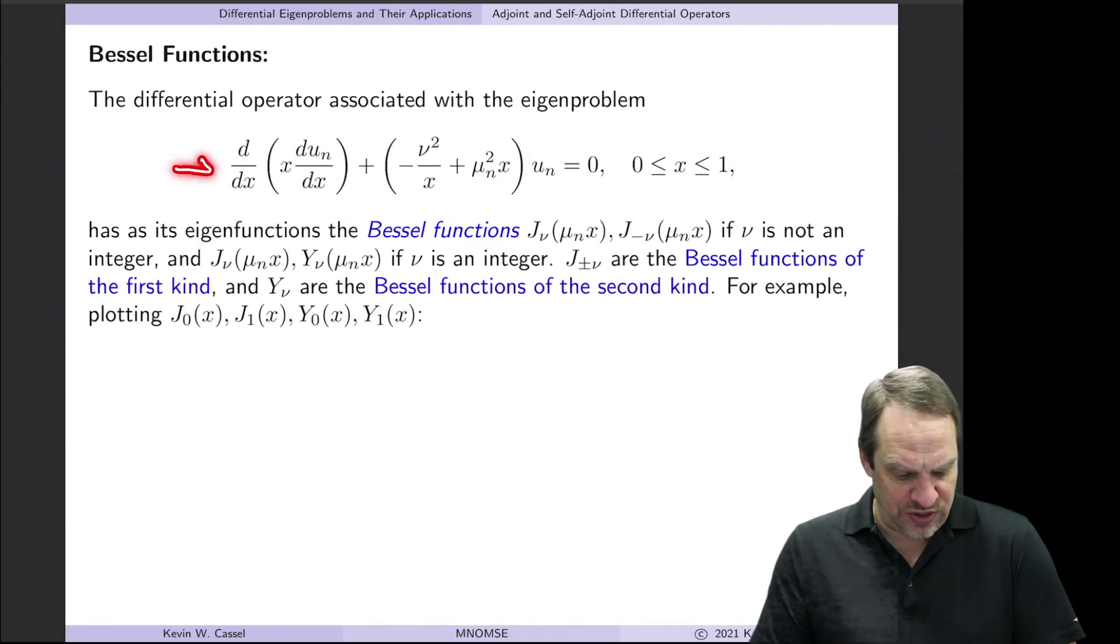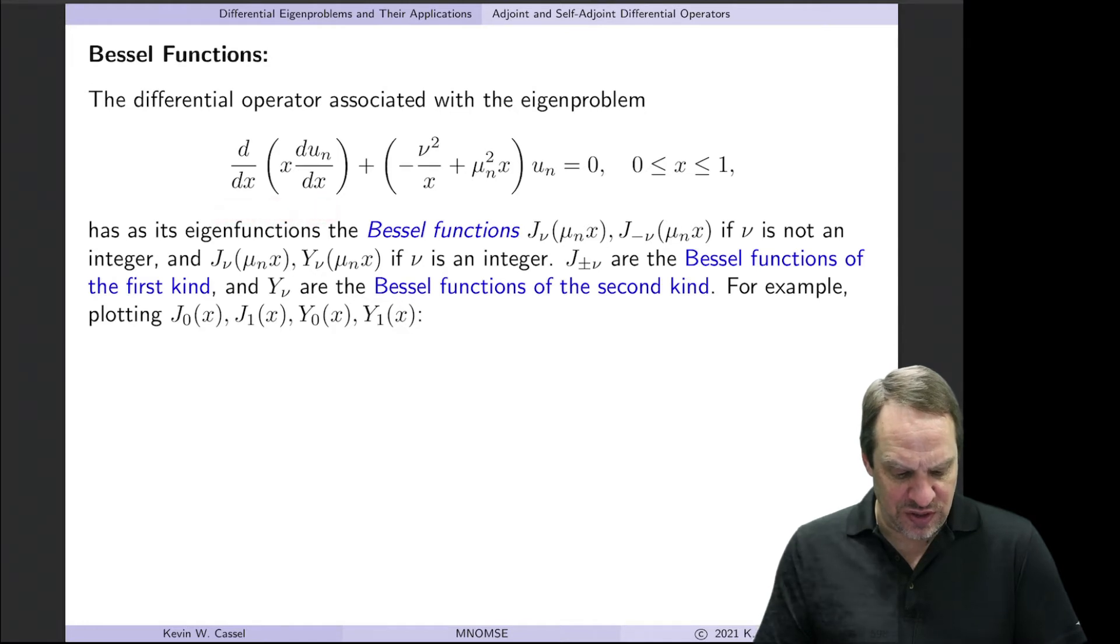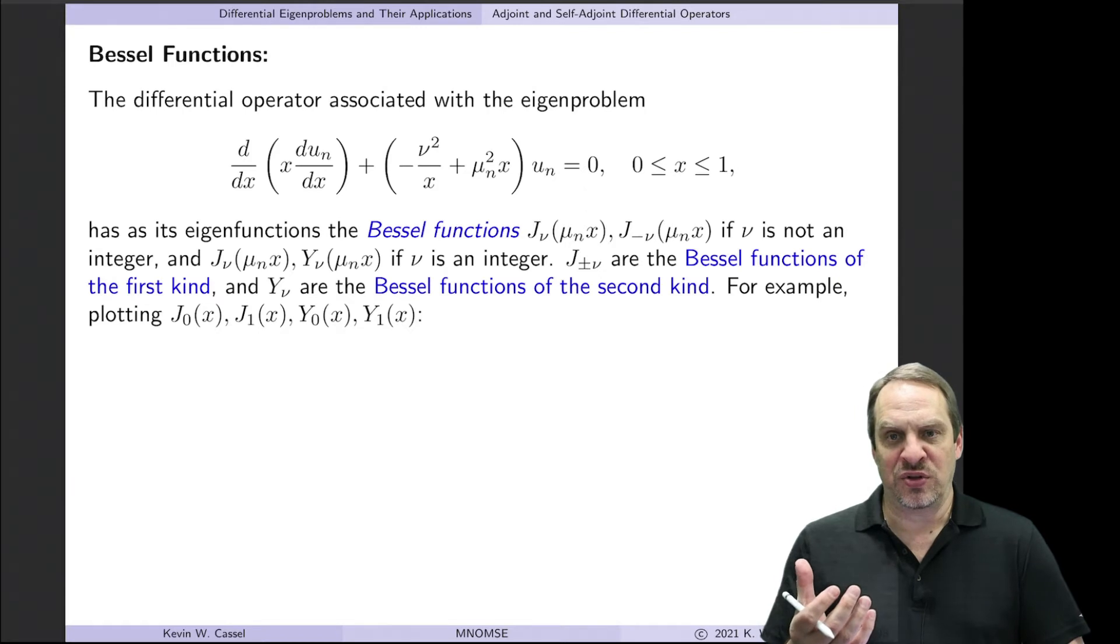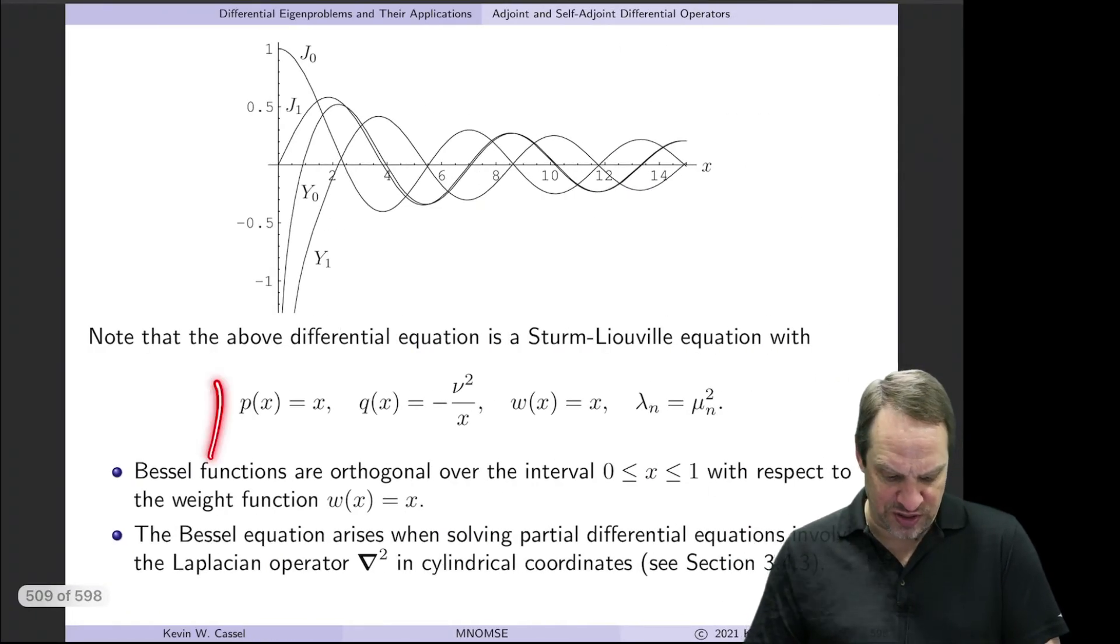Bessel functions. So here's the differential eigenproblem that produces Bessel functions. This is of the Sturm-Liouville form. It's d/dx of x times du/dx plus the quantity minus nu squared over x plus mu squared times x all times u is equal to zero. That's obviously a differential equation. It's a Sturm-Liouville equation with p being x, q being minus nu squared over x, w being x, and lambda being the mu squared. That's all actually here on the next slide.